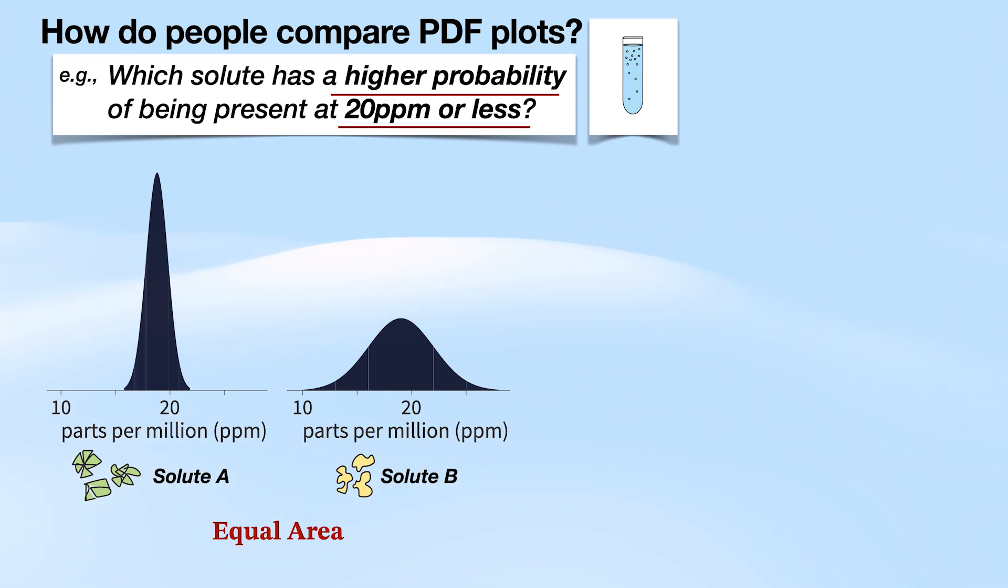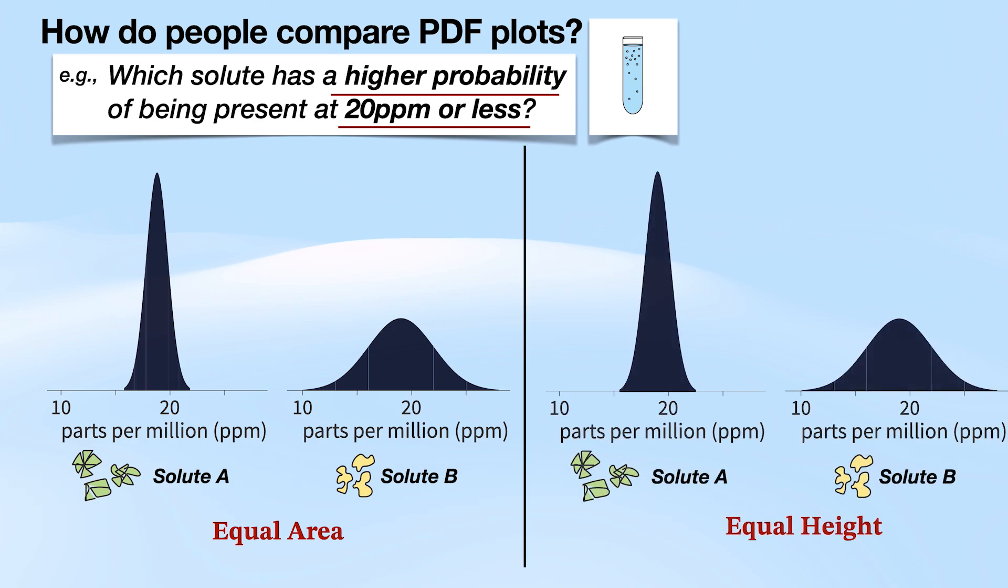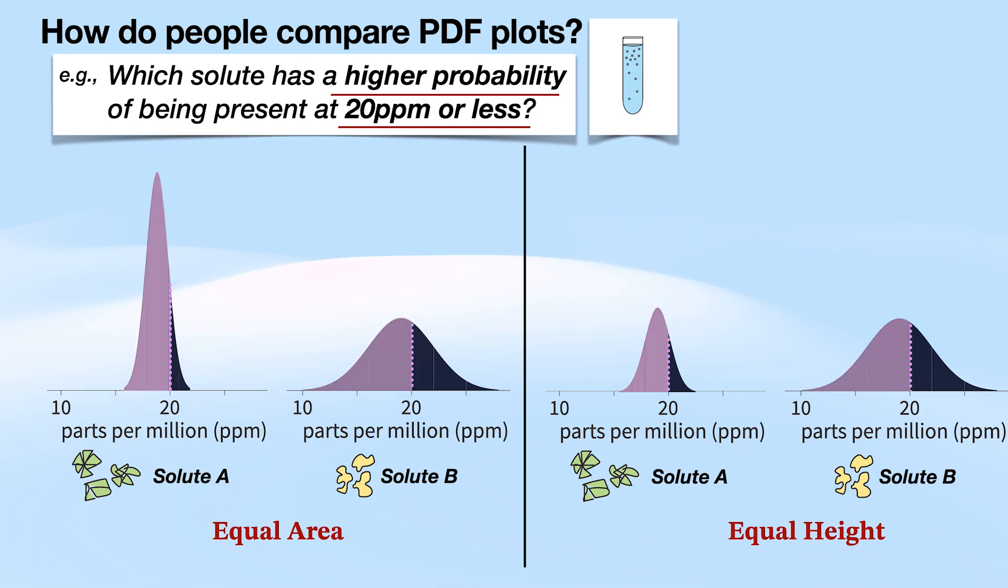We can pull up some probability density functions that tell us the probabilities of solute A and solute B. And these two that you're seeing here show equal area. Whereas we can take the same exact PDF plots and we can scale them so that they're equal height. So now we're looking at the same information on both the left and the right hand side. If we wanted to answer this question, we would find where 20 parts per million crosses the x-axis and draw a line all the way up to the top of the curve. And then we would find this partial area under the curve to correlate with the cumulative probability that we're interested in.